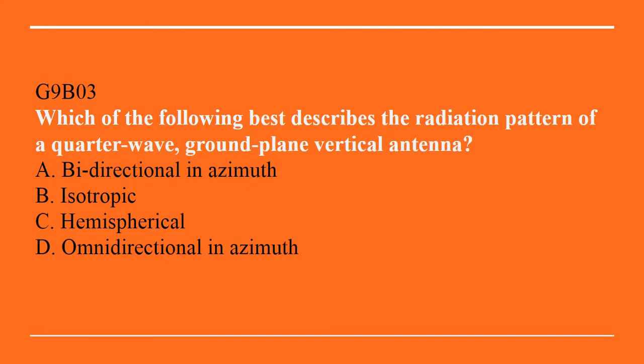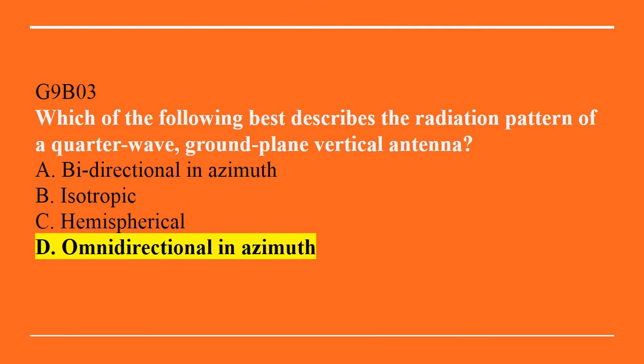G9B03: Which of the following best describes the radiation pattern of a quarter-wave ground plane vertical antenna? A. Bidirectional in azimuth. B. Isotropic. C. Hemispherical. Or D. Omnidirectional in azimuth. The correct answer is D, omnidirectional in azimuth.